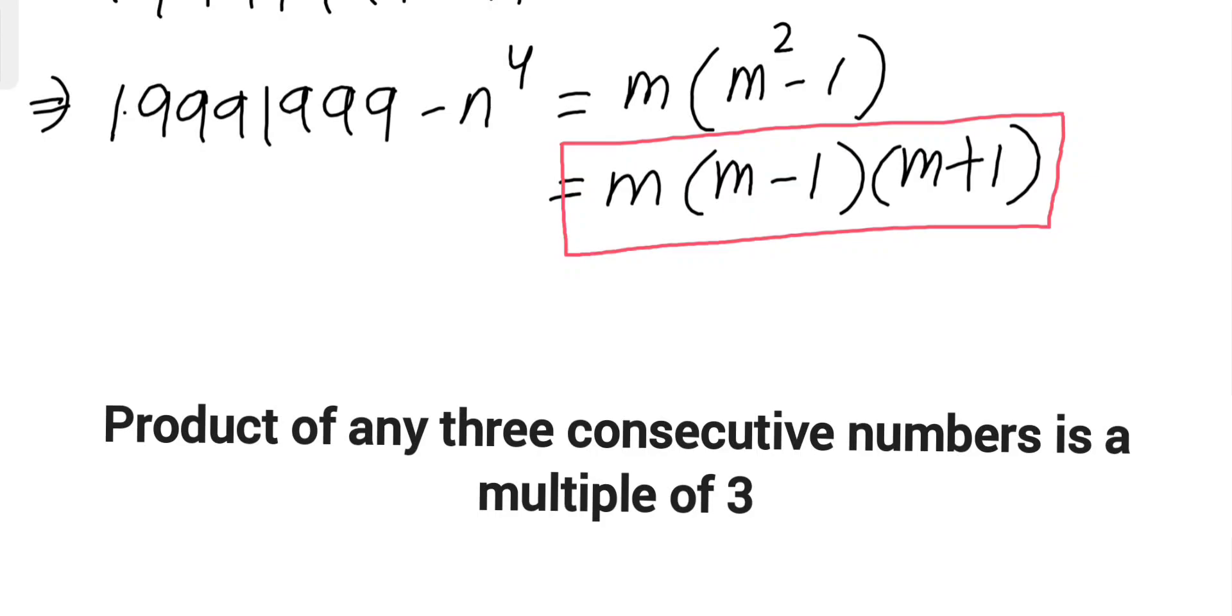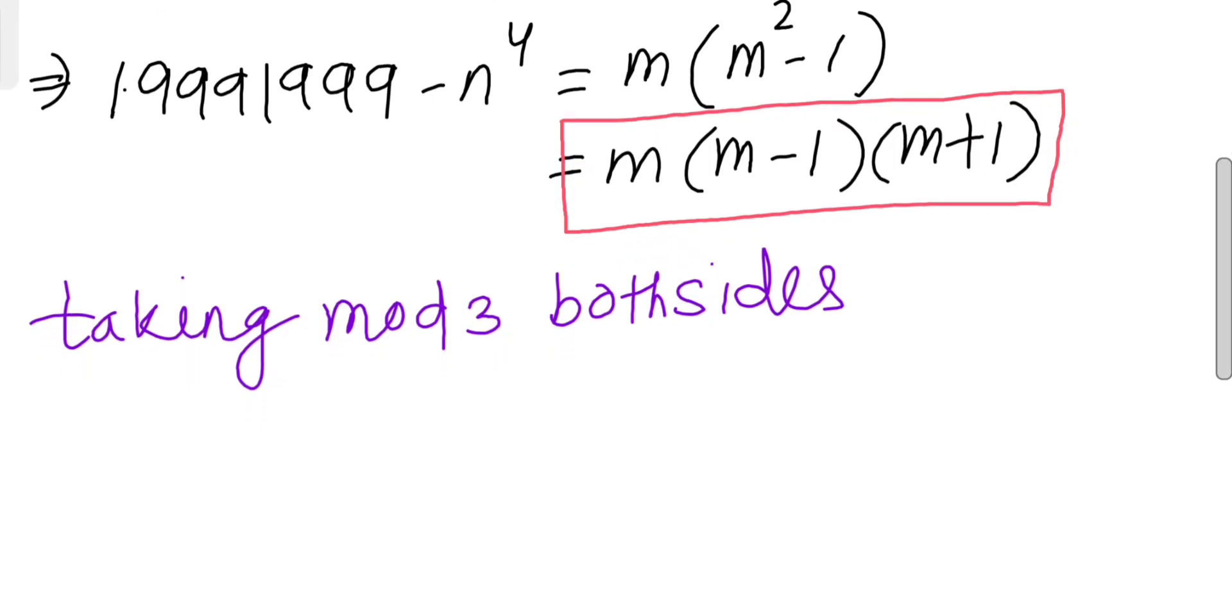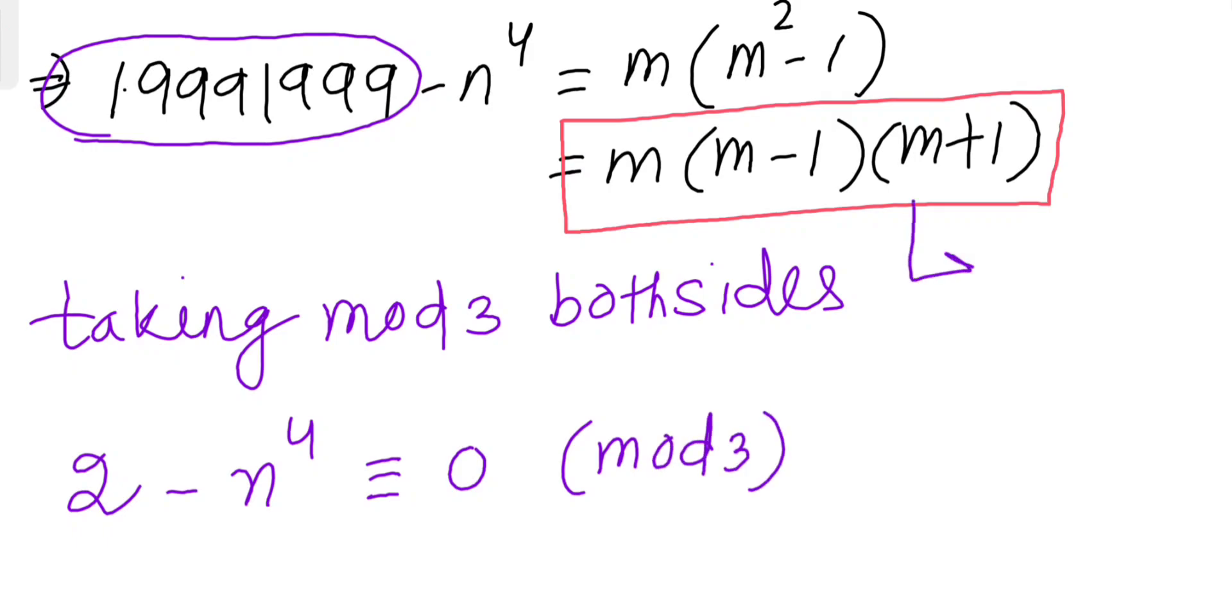So here we take modular arithmetic. We will take mod 3 both sides. When taking mod 3 both sides, this one will leave 2 as a residue, so 2 - n^4 must be 0 mod 3 because this one is a multiple of 3.